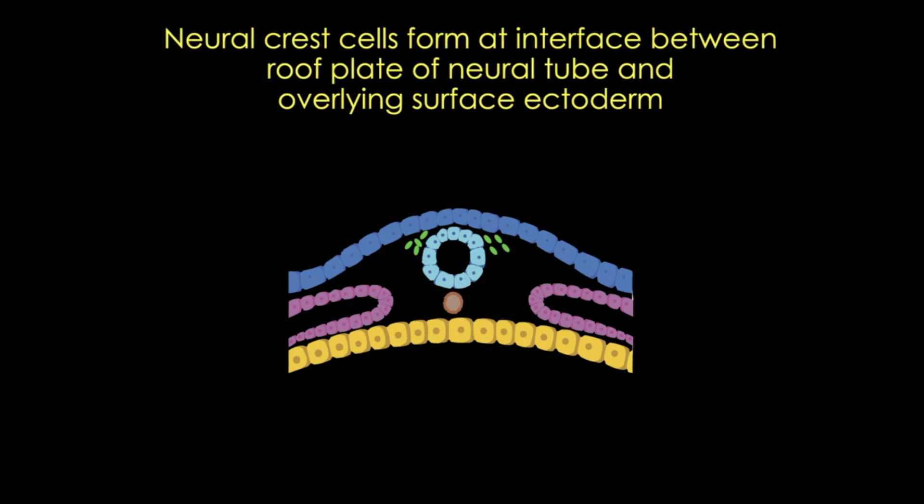By Day 28, we've altered the fate of some of the surface ectoderm to make neuroectoderm. That neuroectoderm has formed a closed tube, now inside the body, and the neural crest cells have formed. This temporary cell population, here in green, consists of bilaterally paired strips of cells that arise at the border between the neural and non-neural ectoderm during late gastrulation and early neurulation. These cells form along the whole cranial-caudal axis.